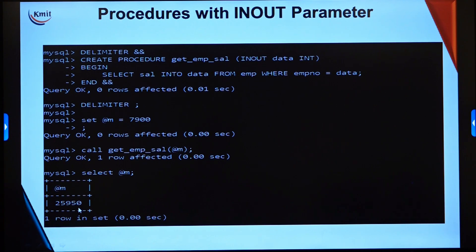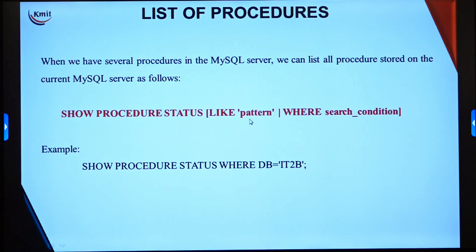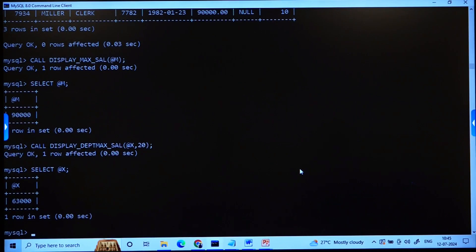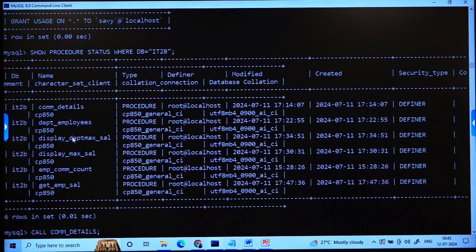This covers the three types of parameters. Since procedures are synonymous to methods in programming, you should be able to understand this easily. All your SQL statements have to be enclosed in a procedure and you call them — write it once, call it several times. To see all procedures on a particular database, use SHOW PROCEDURE STATUS, optionally with a WHERE condition such as SHOW PROCEDURE STATUS WHERE DB = 'IT2B'.